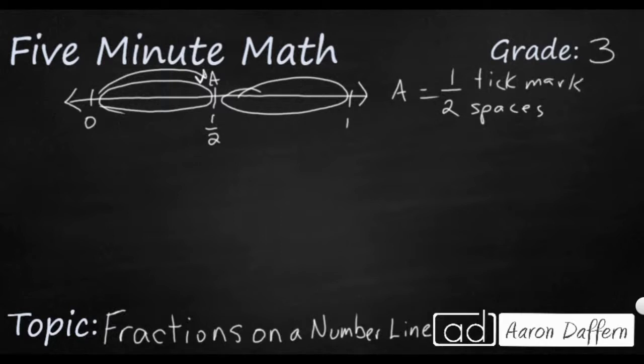Now, if you wanted to keep counting and say, let's say what this B is right here, well, one, it's already labeled, but there's still two spaces, but it is the second tick mark, because two halves is equal to one.